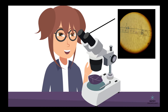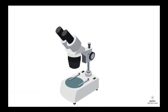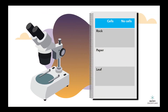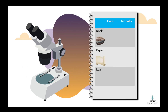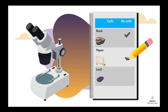You can further your understanding by studying the differences between living and non-living things. You could observe a rock, a piece of paper, and a leaf under the microscope and compare the results. The rock and paper will not have any cells, while the leaf will be made up of many. This shows us that cells are a defining characteristic of living things and that all living things are made of cells.